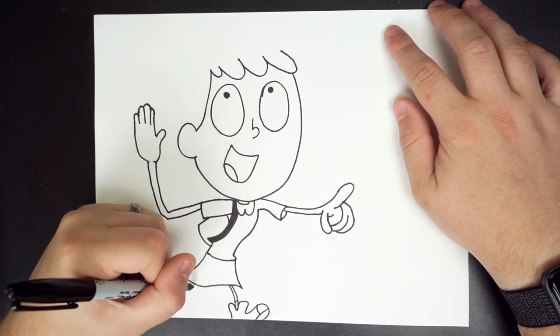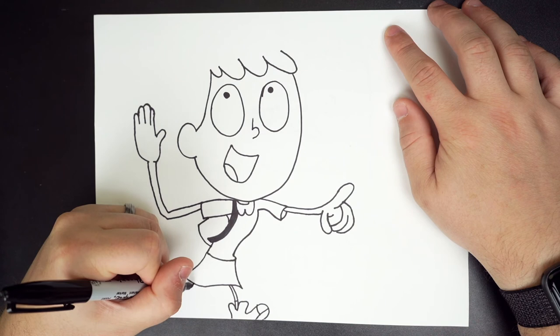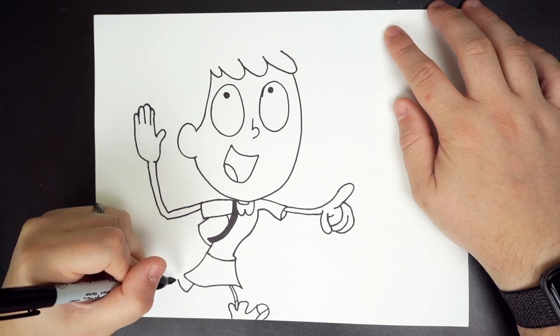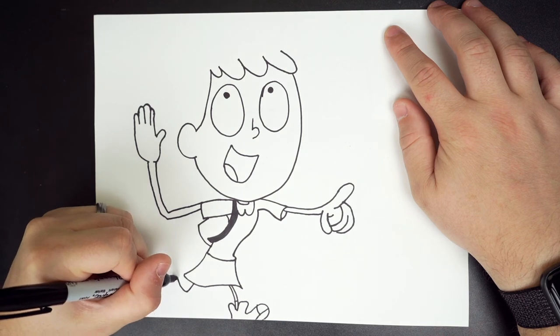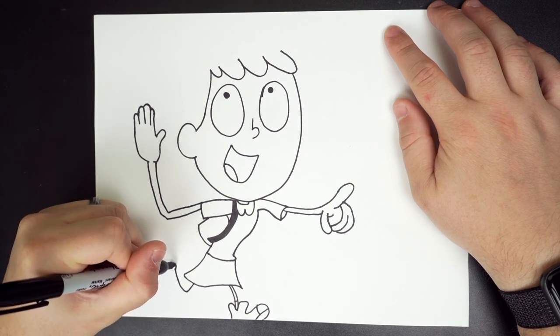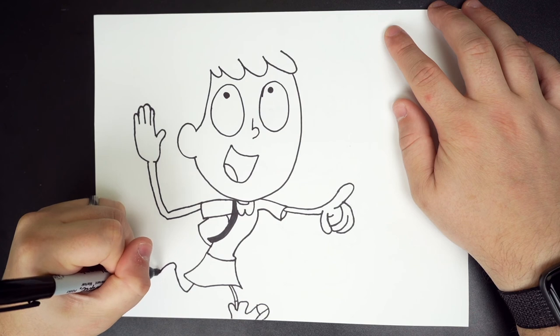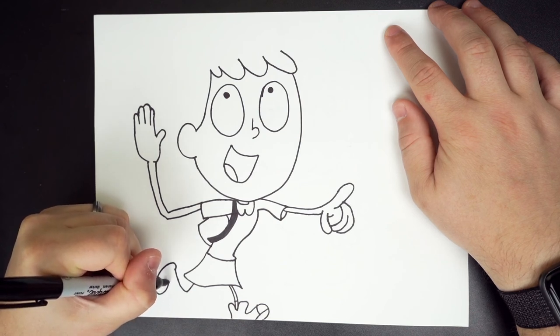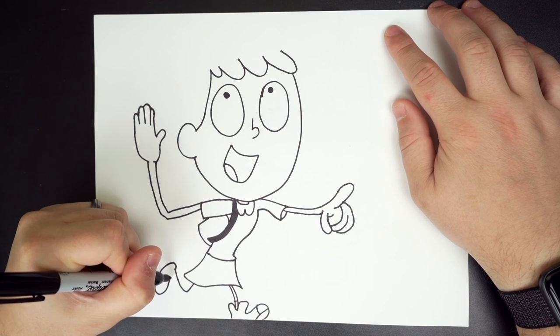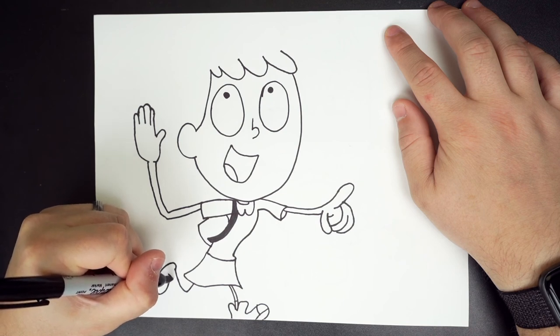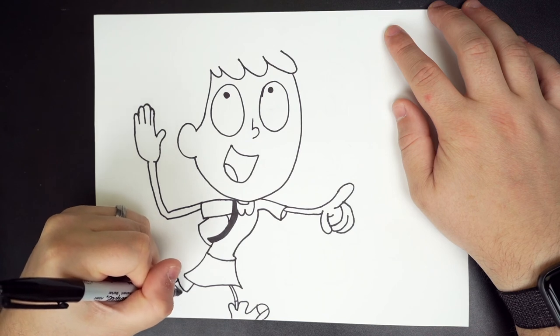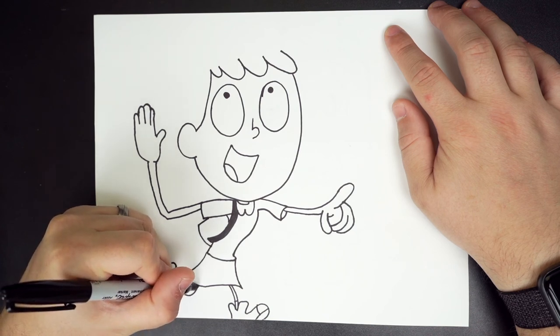And then her other leg we're going to come down like she's running. Come up. Up. Actually let's just keep going up. And then come around. A little bump. Or heel. Come around. And then let's just do a little line. With her sock. And follow this. To connect her leg. Awesome.